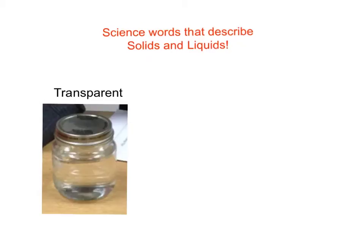Science words that describe solids and liquids. Transparent: a solid or liquid that is clear and lets all the light through. For example, a clear window or water.